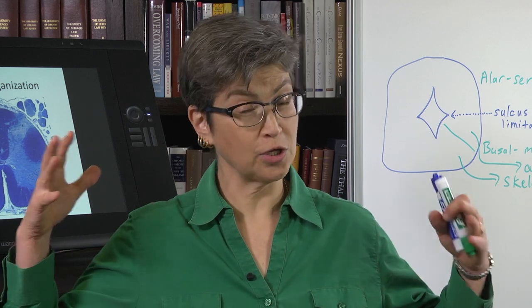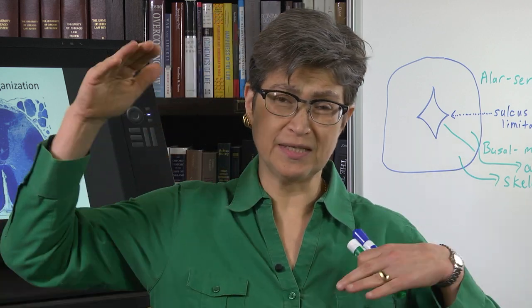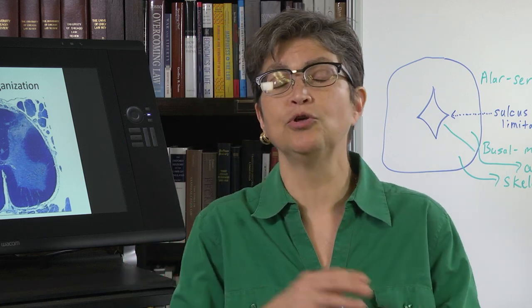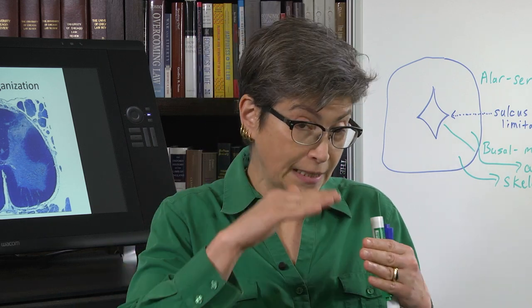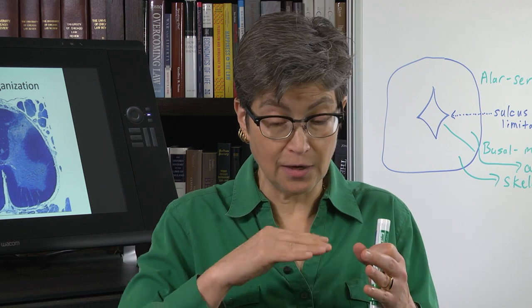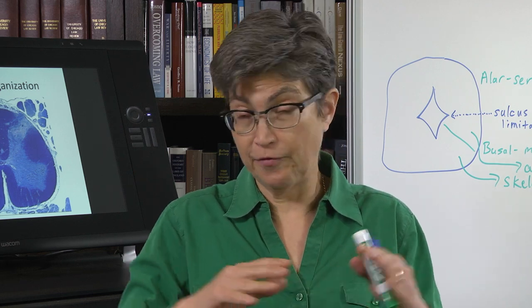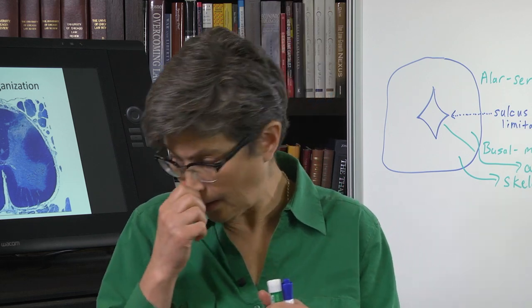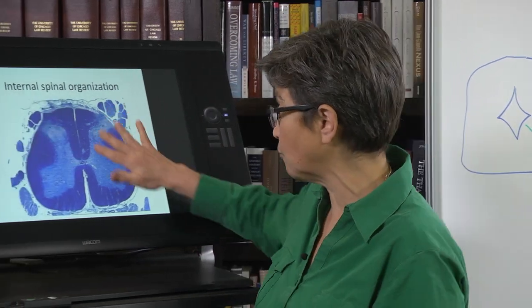Great, so we've talked a lot about the spinal cord, its segments, its topography, its function, and now we're going to look inside. We're going to go in and look at the anatomy of a cross-section, a quintessential cross-section within the spinal cord, and here is a picture of one.